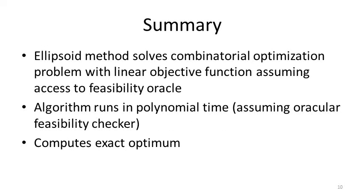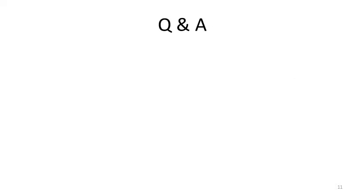In summary, the ellipsoid method solves combinatorial optimization problems with linear objective functions assuming access to a feasibility oracle. The algorithm runs in polynomial time — as proved by its inventors — assuming an oracular feasibility checker that runs in constant time independent of the problem size. It also computes not just an approximate optimum, but the exact optimum if allowed to run long enough.